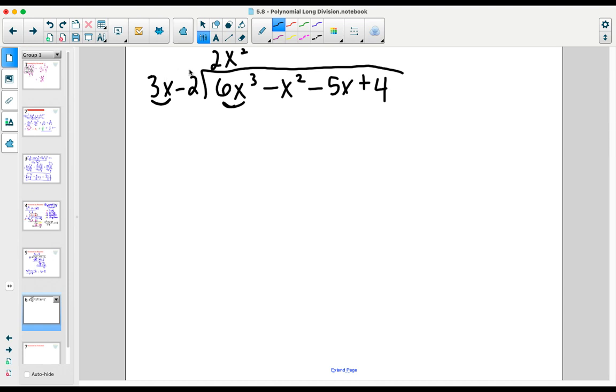Multiplying that 2x² by the binomial on the outside, we get that 6x³, which is the intention. We're always going to look for that first term to disappear. And then 2x² times -2 is -4x².